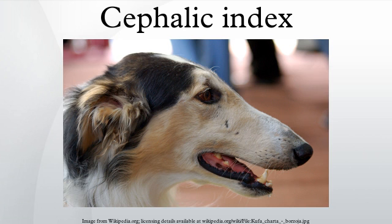List of mesaticephalic cats: American Shorthair, Russian Blue, Egyptian Mau, Ocicat, Manx, Russian White, Black and Tabby, Bengal Cat, Siberian Cat, Donskoy, Turkish Van. Note: most cat land races are mesaticephalic.